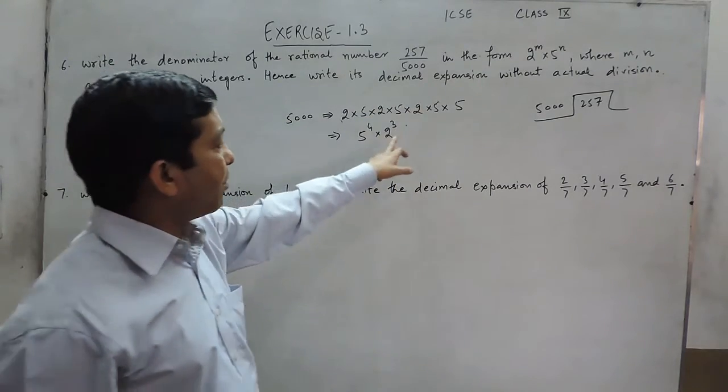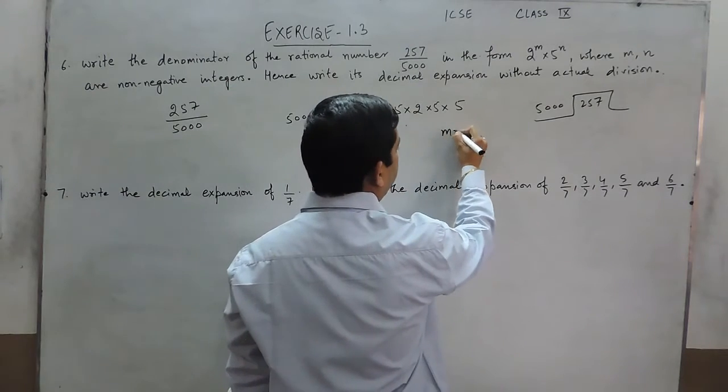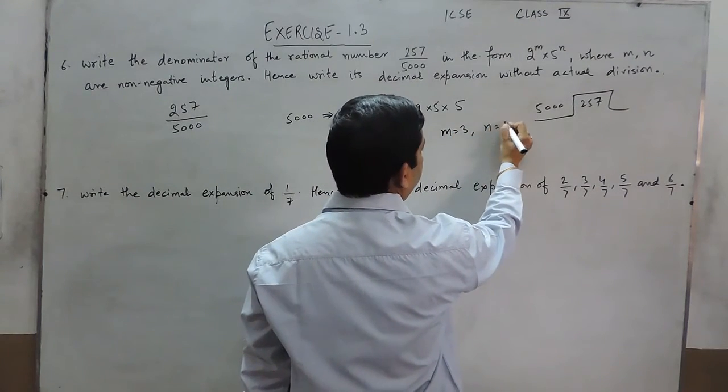Where the value of m is the power of 2, so the value of m is 3 and the value of n is 4.